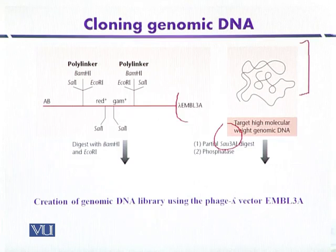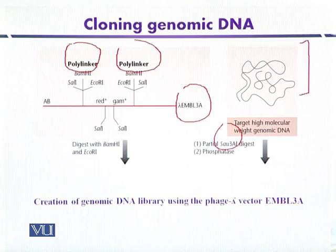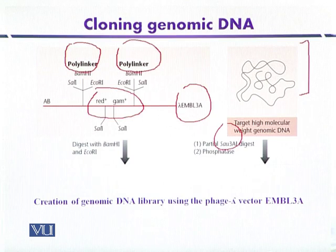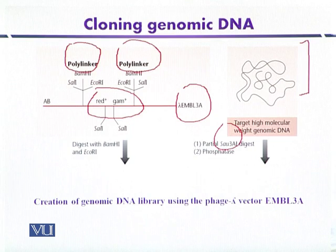On the other hand, Lambda EMBL3A shows a genetic map containing different polylinker sites with restriction sites for BamHI, SalI, and EcoRI. Within the central non-essential region, genes called red+ and gam+ are present, which are required for replication of the lambda genome. When these genes are present, the phage will not be able to infect the suitable cloning host, which is the P2 lysogen of E. coli.